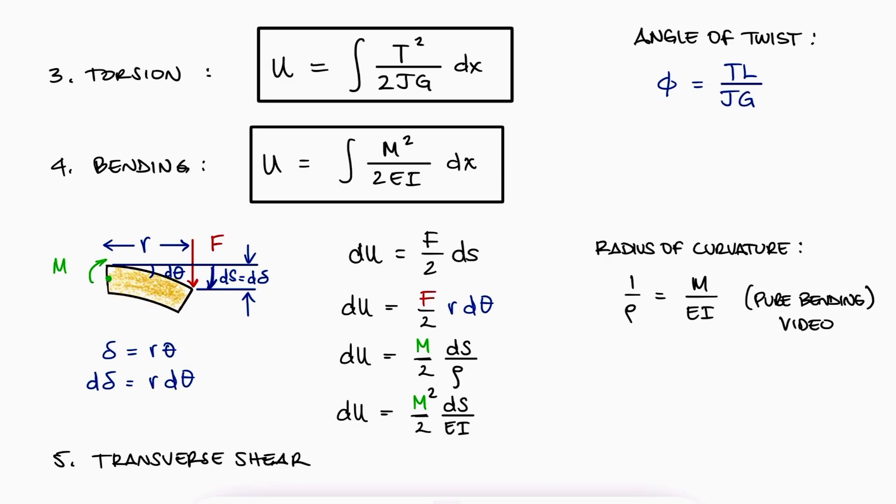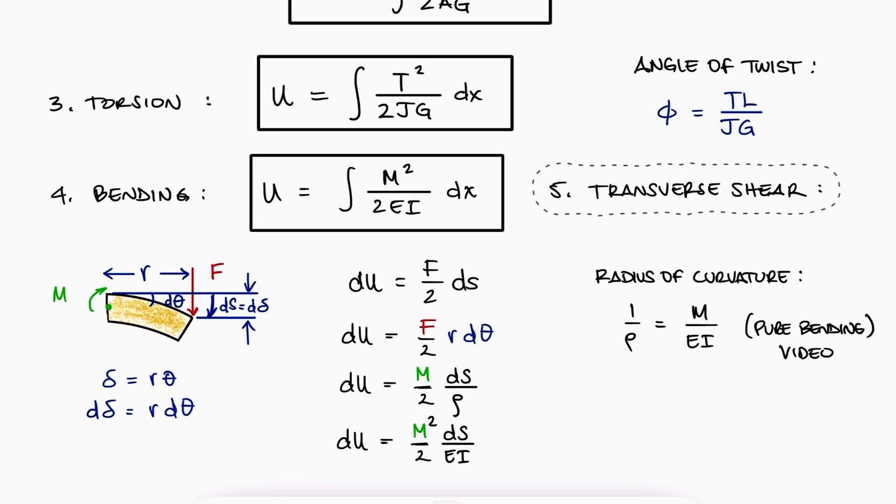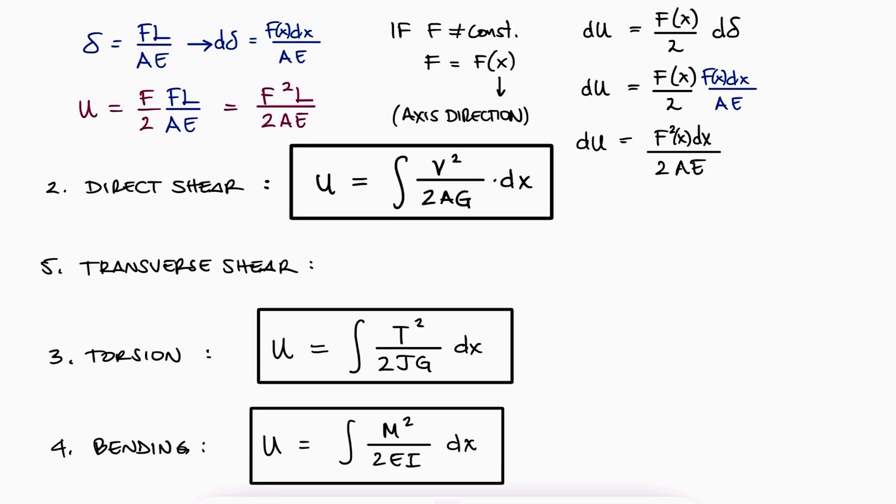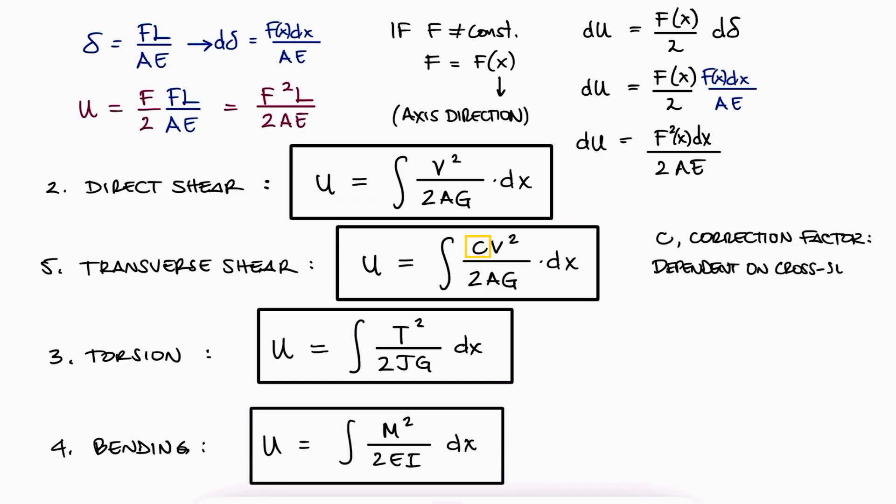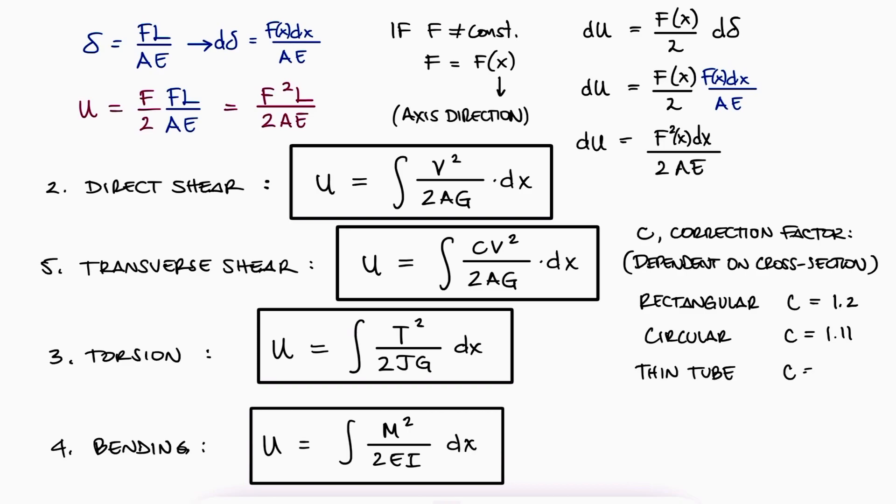Finally, because we never studied the deflection due to transverse shear, and because the math process is much more complex, we write the transverse shear expression as a variation of the direct shear expression where c is a correction factor whose values depend on the shape of the cross-section. For example, solid rectangular, solid circular, cylindrical, or hollow and thin rectangular sections.